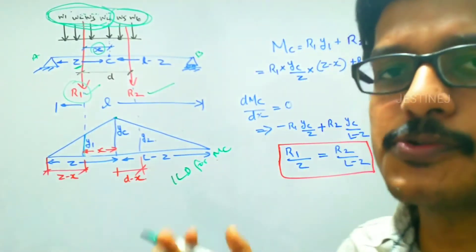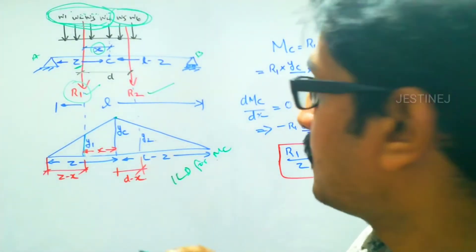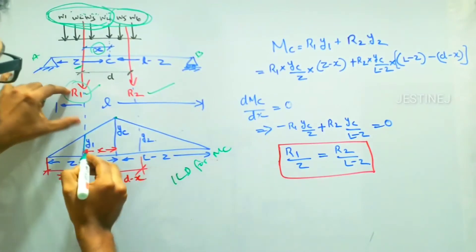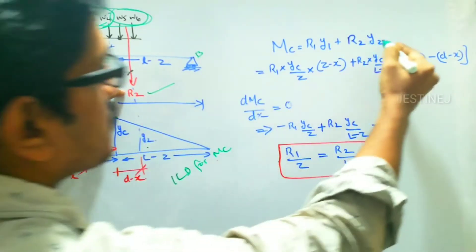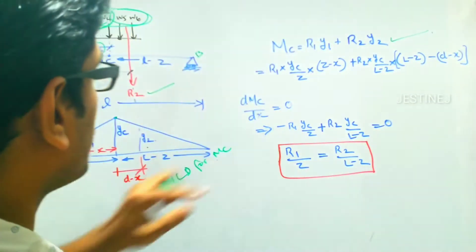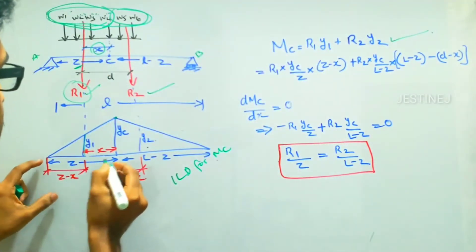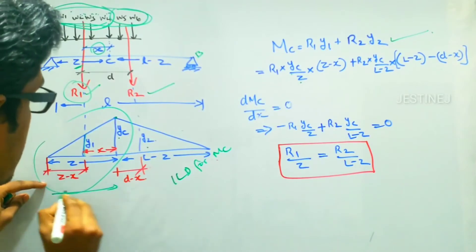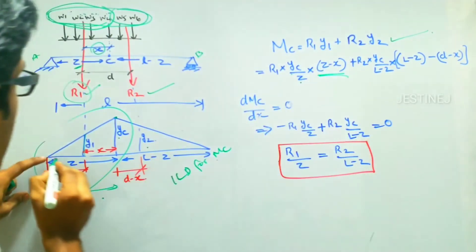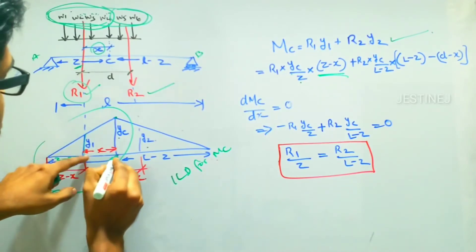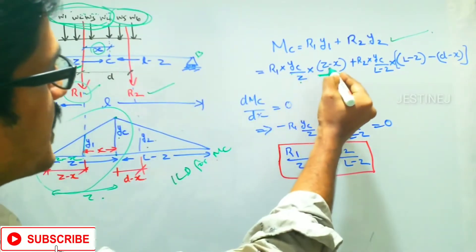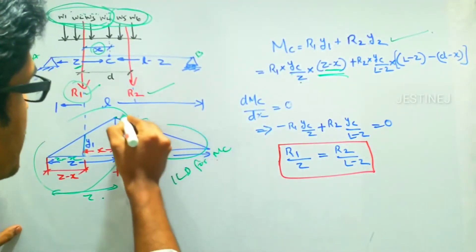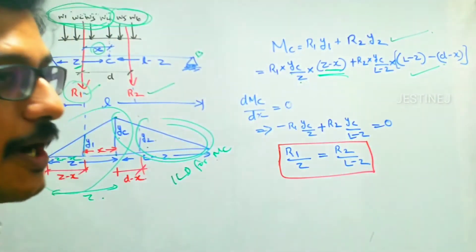Using similar triangle laws we find: MC equals R1·y1 plus R2·y2, where R1 is multiplied by y1 and R2 is multiplied by y2. We can find y1 using the similar triangle relationship: yc divided by z, multiplied by (z minus x), where x is the distance already defined and (z minus x) is the remaining distance. Similarly y2 can be found by comparing the small triangle with the bigger triangle.